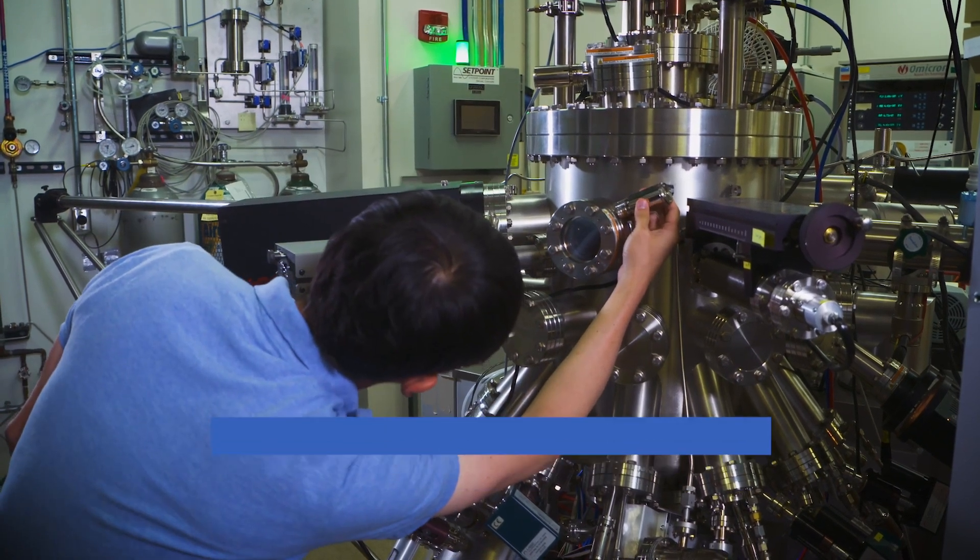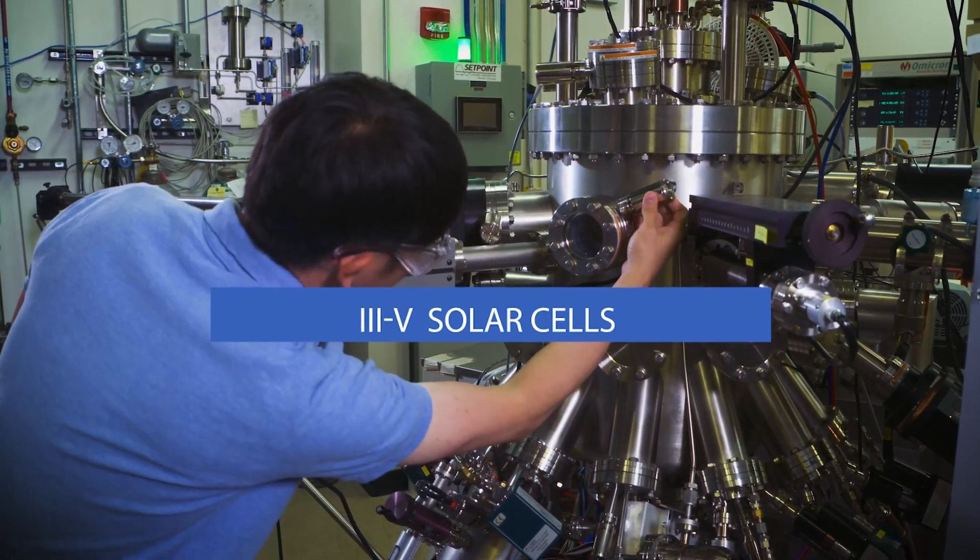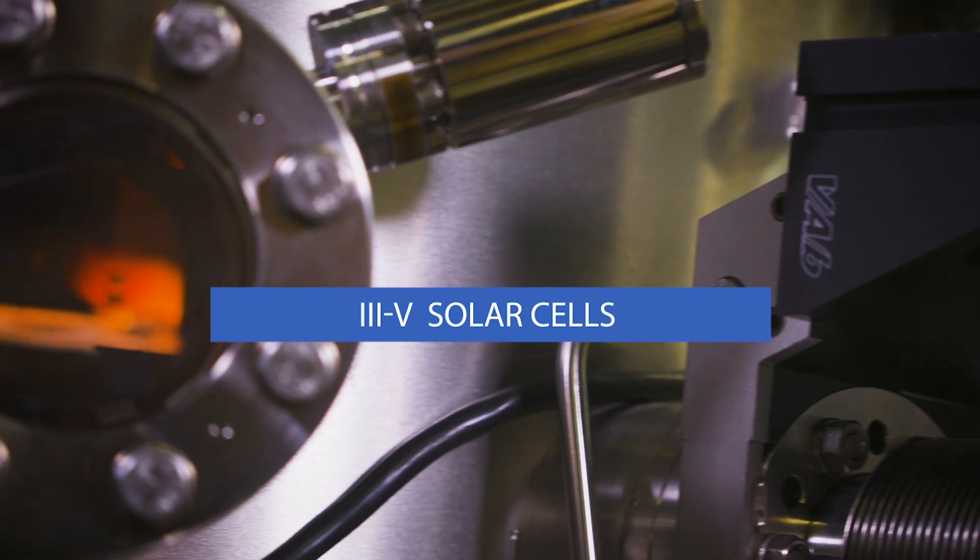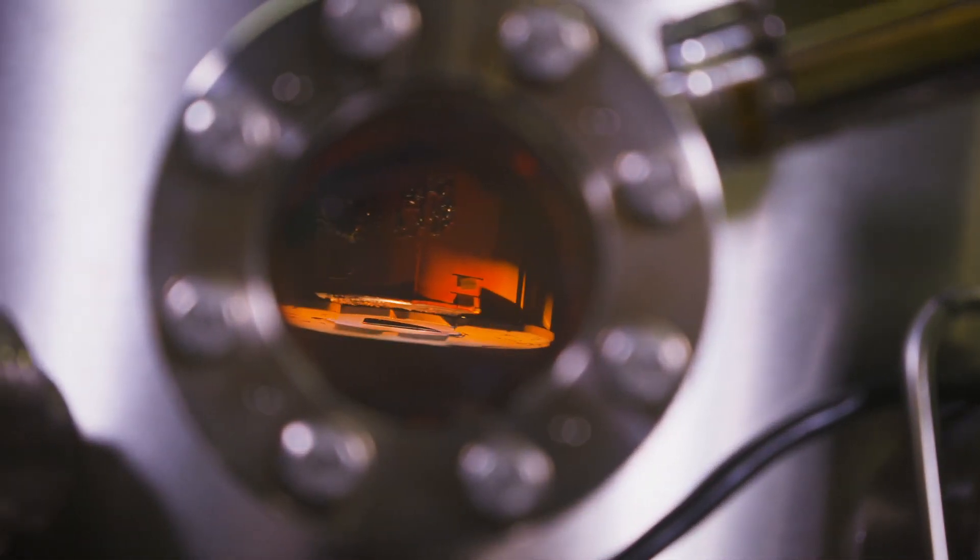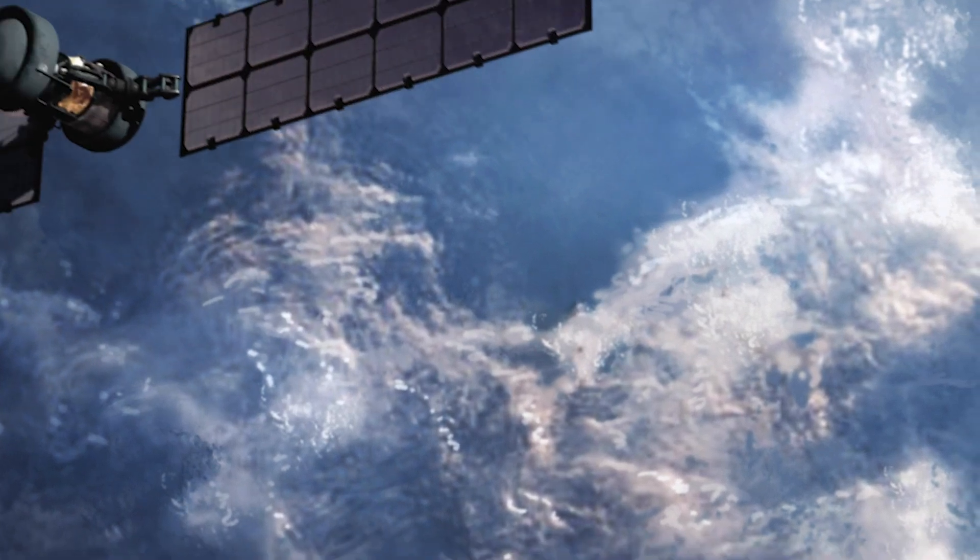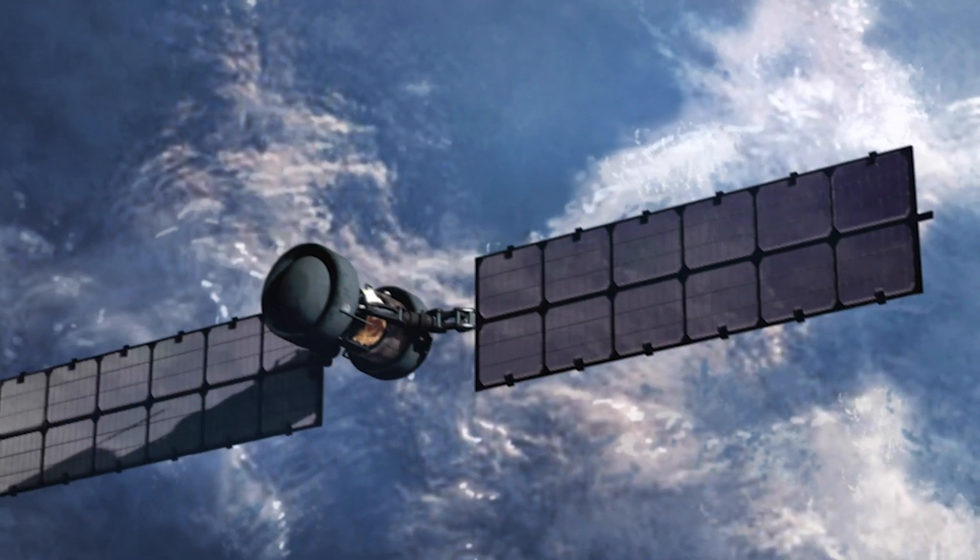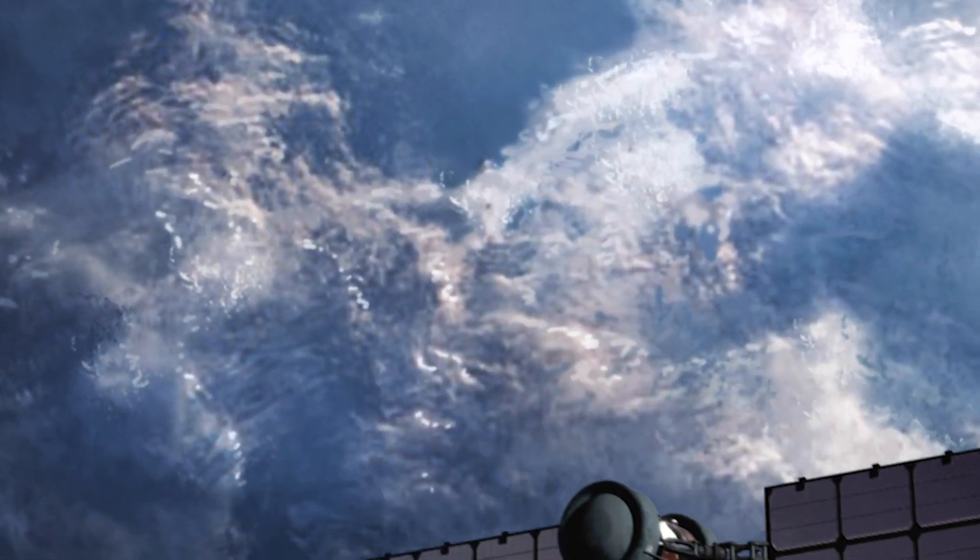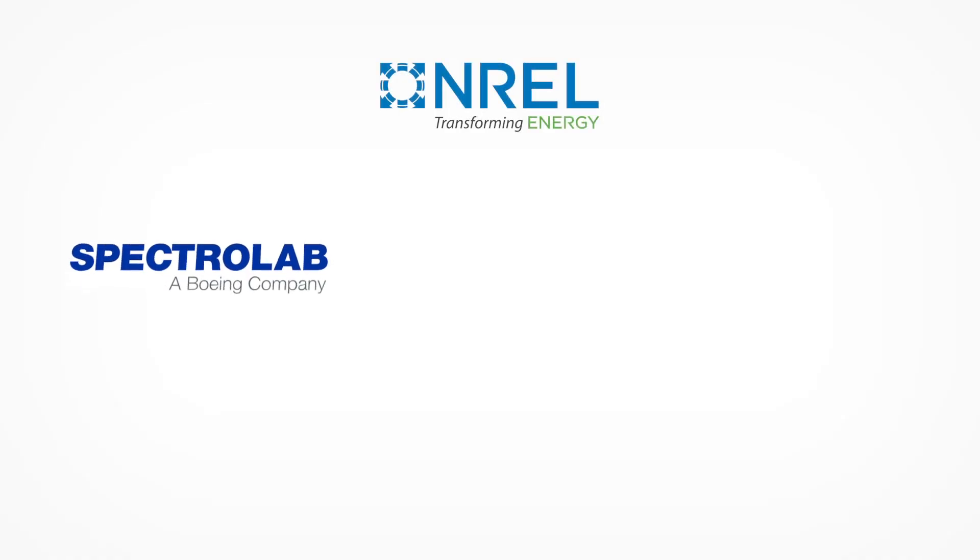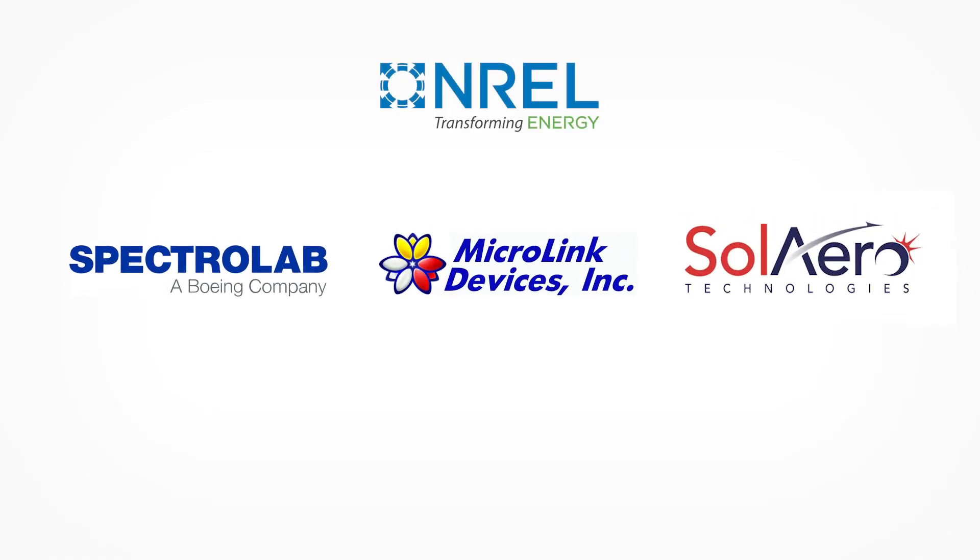3-5 solar cells, named for semiconductors made from columns 3 and 5 of the periodic table, are the most efficient solar cells. They are ideal for applications where efficiency is more important than cost, such as spacecraft. NREL worked with leaders in the space PV industry to develop today's 3-5 solar cells.